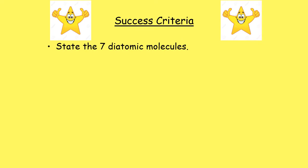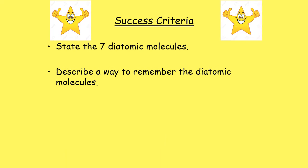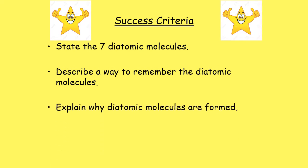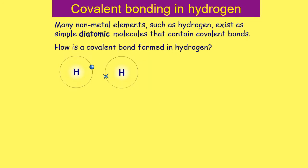Your success criteria for this lesson: you should be able to state all seven of the diatomic elements, describe a way to remember them, and explain why these diatomic molecules are formed. So let's get into our lesson about diatomic molecules.